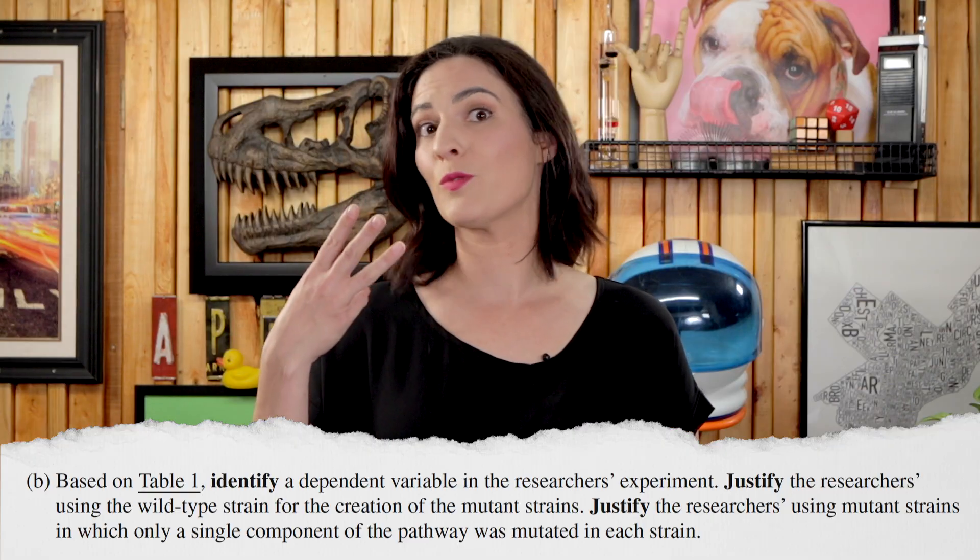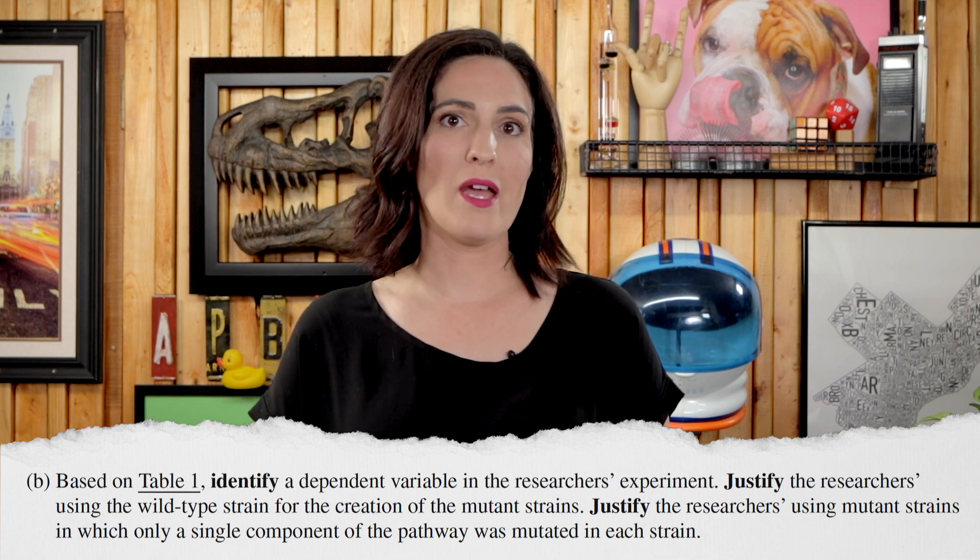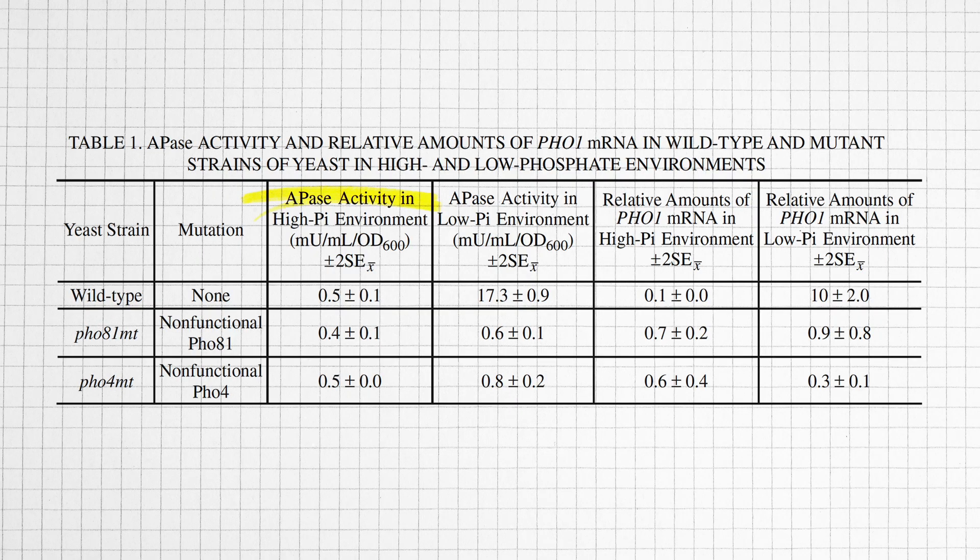Part B had three task verbs for three points. There were two possible dependent variables: the activity of the APA's enzyme or the amount of PHO1 mRNA. You can say either, but you don't need to state both for the point. The researchers used the negative control wild type strain to create the mutant strain in order to make sure that any change in the dependent variables is due to the mutation and resulting non-functional protein only, since everything else is held constant. The researchers used mutant strains in which a single component of the pathway was mutated in each strain so that they could isolate each protein in the pathway and their specific function.